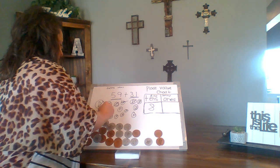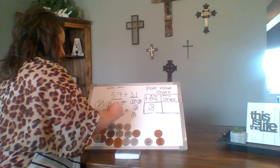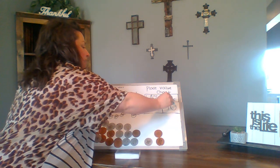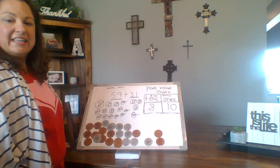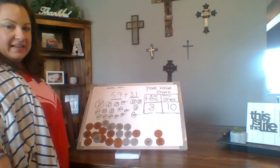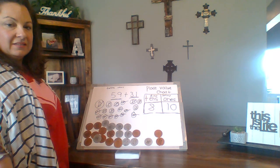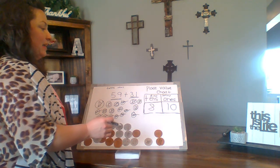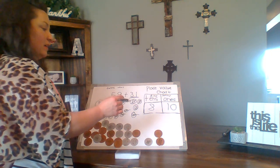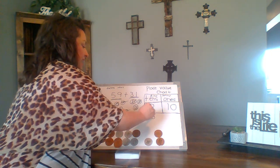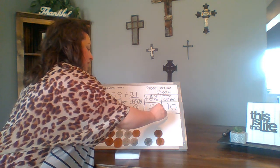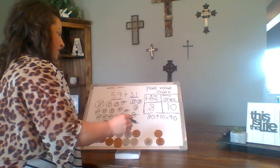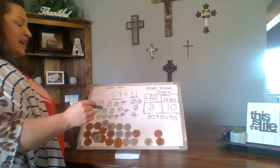And count the pennies: 1, 2, 3, 4, 5, 6, 7, 8, 9, 10 — ten ones. I know that eight tens is 80, and if I add ten more to 80, that makes 90. So the answer is 90.